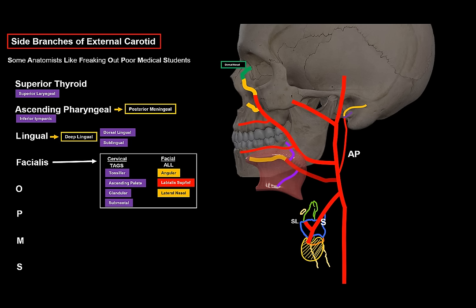Next is the occipital artery, branching posteriorly from the external carotid to supply the occipital region. It has a mastoid branch going into the mastoid foramen supplying the meninges, and a sternocleidomastoid branch for that muscle. It also has a side branch for the external ear and descending branches supplying neck muscles like the trapezius. To remember the occipital artery, associate it with everything in the posterior part of the head and neck.